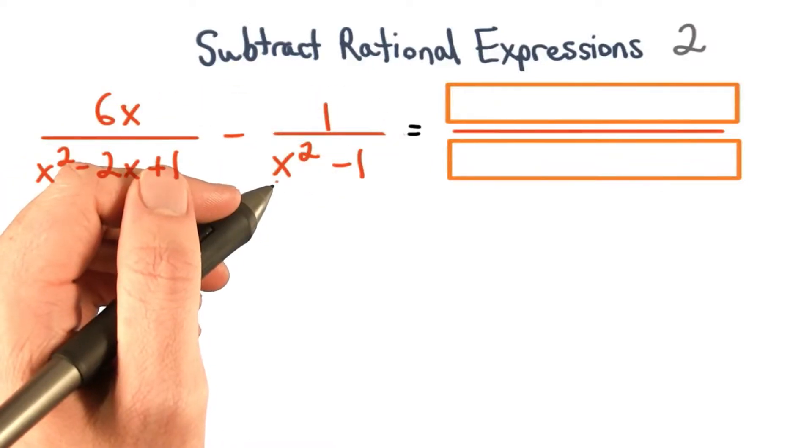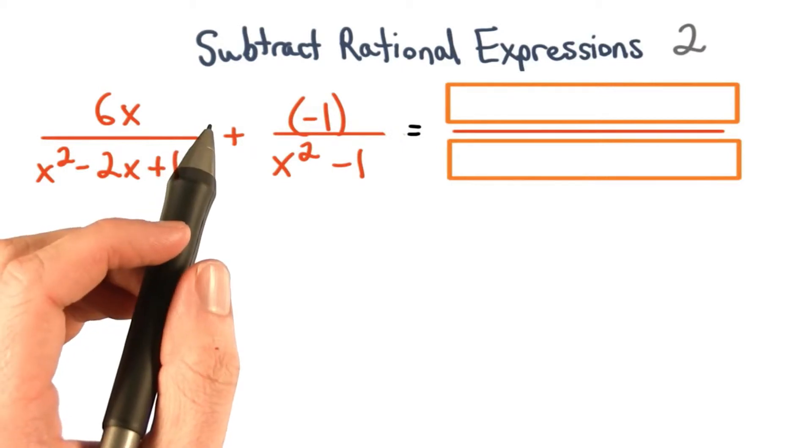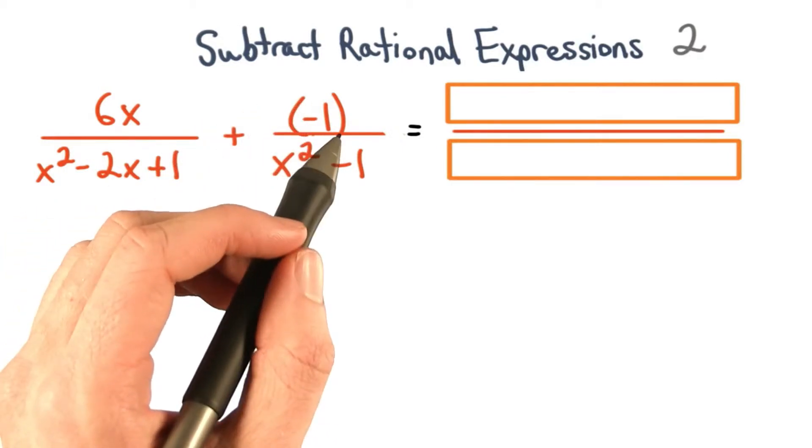To subtract the second rational expression, we really want to add the opposite. We want to distribute our subtraction sign to each term in the numerator, which gives us a negative 1.